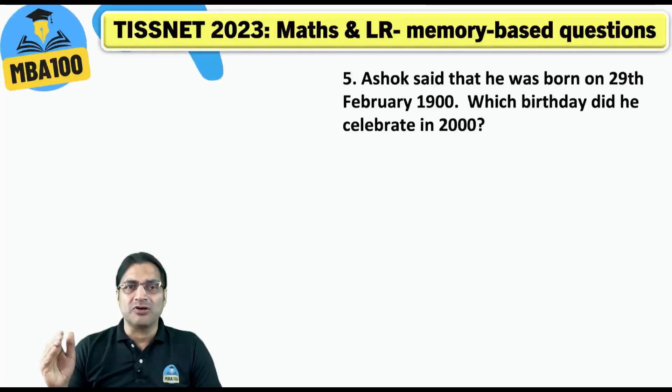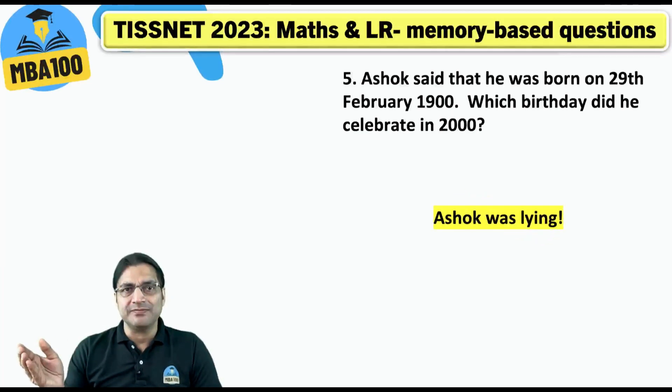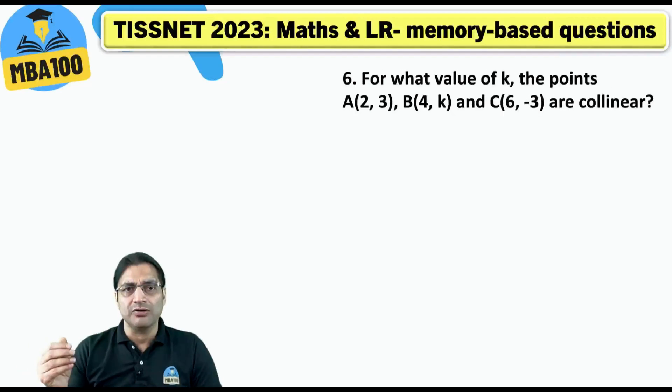Ashok said that he was born on 29th February 1900. Of course Ashok is lying — 1900 was not a leap year. I am sure we all know that.